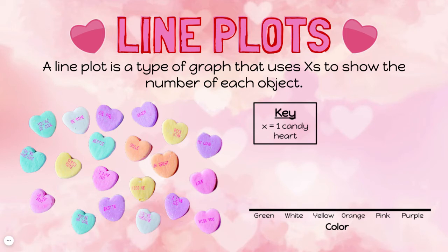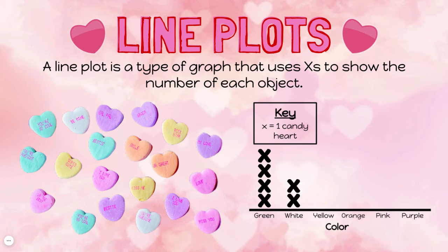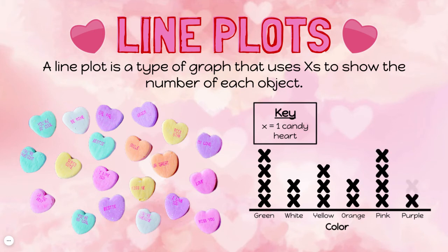All right, I still have four green candy hearts, so I'm going to add four X's — one X for each of the green candy hearts. I have two white, so I need two X's above white. Three X's above yellow to show my three yellow hearts, two above the orange, four X's above the pink, and finally five X's above the purple.